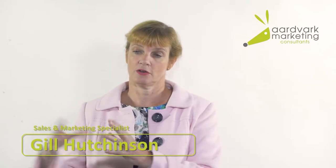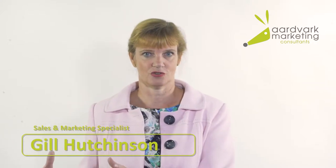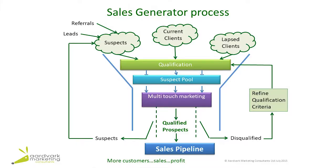If you get a hundred visitors to your website, perhaps five might fill in a contact us form. You're persistent, so you get hold of those five on the telephone to have that initial conversation. From that conversation you might get three meetings, and down the line you might get one sale. A typical sales process starts with a hundred at the top of the sales funnel just to get one sale at the bottom.